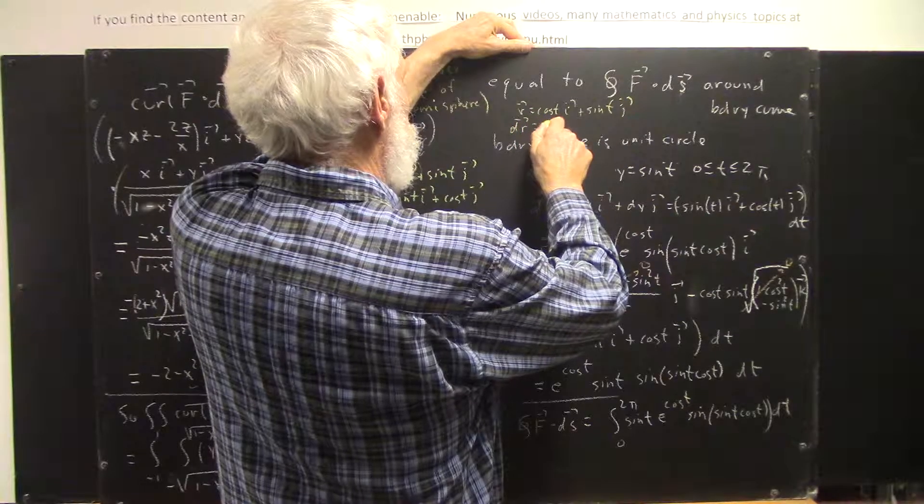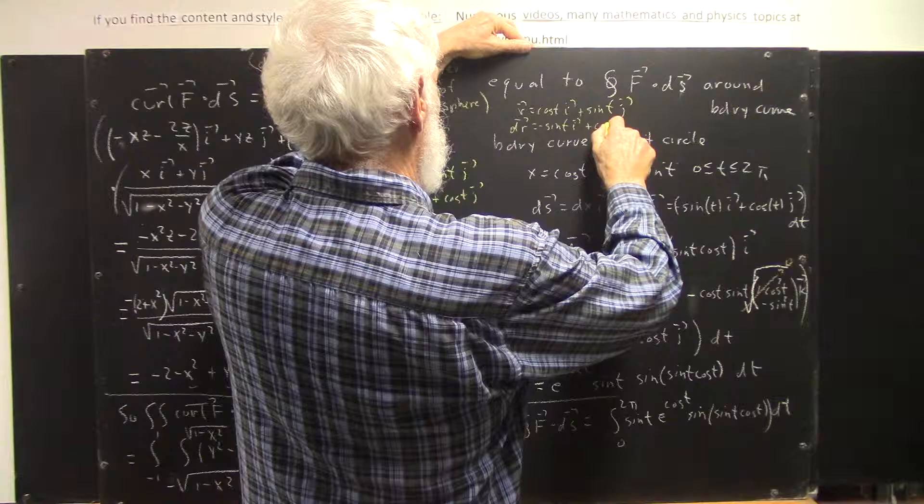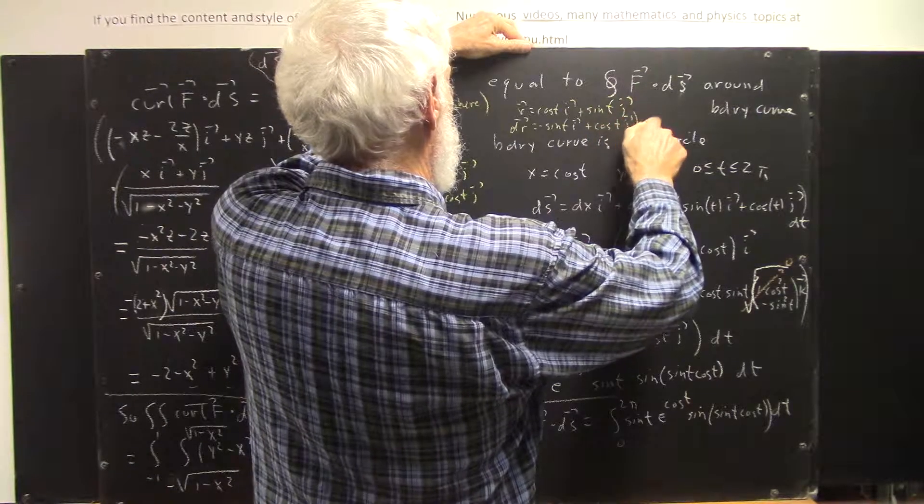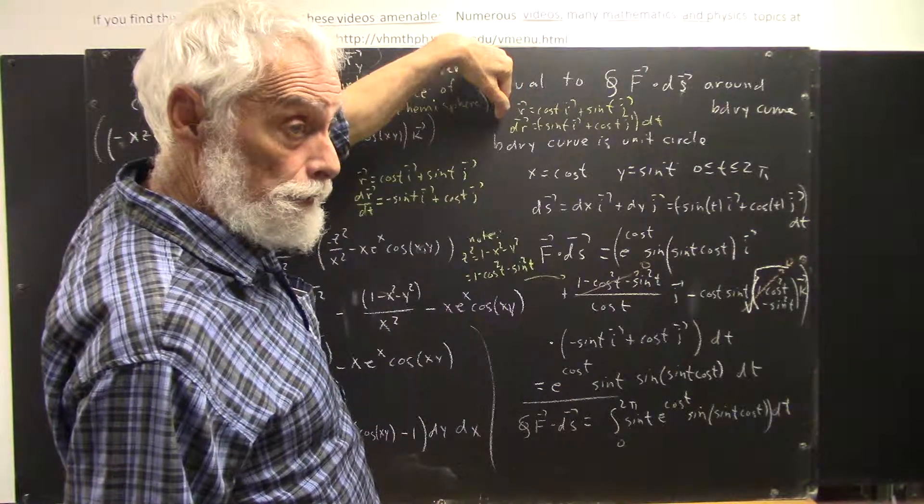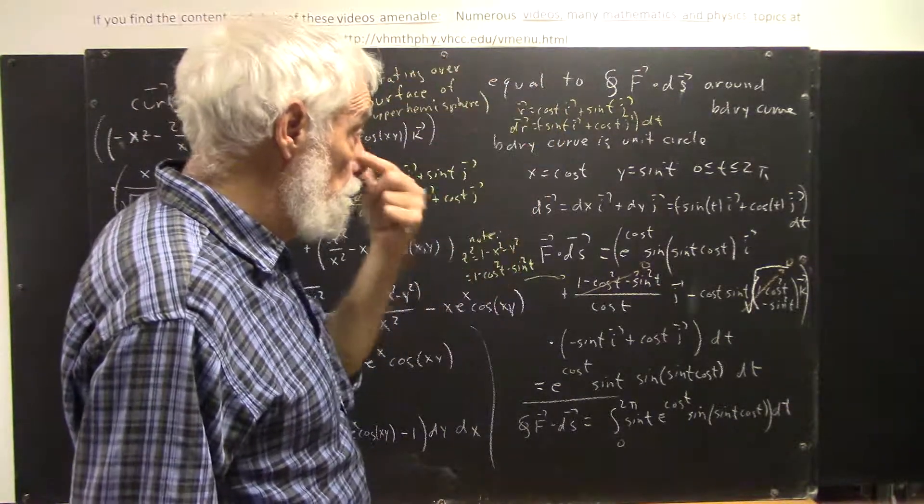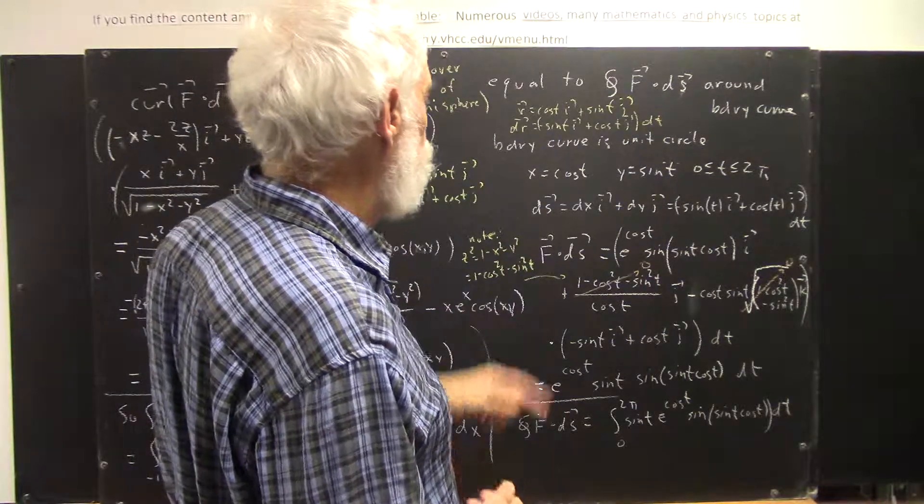we could have written r equals cosine t, i plus sine t, j. So that dr equals negative sine t, i plus cosine t, j, dt.